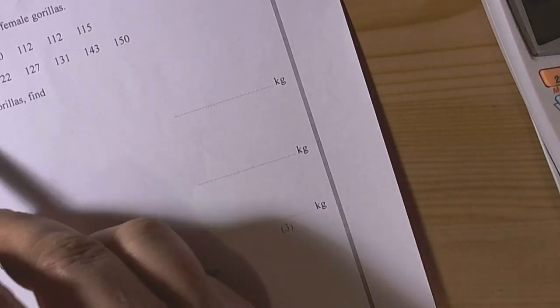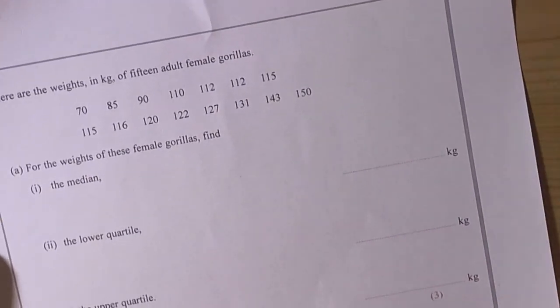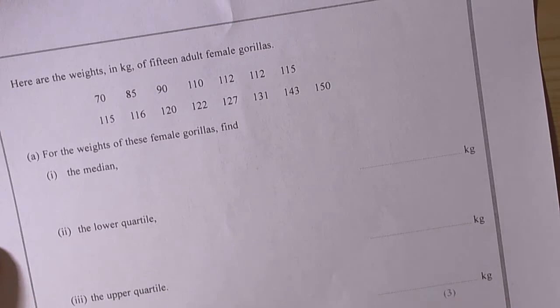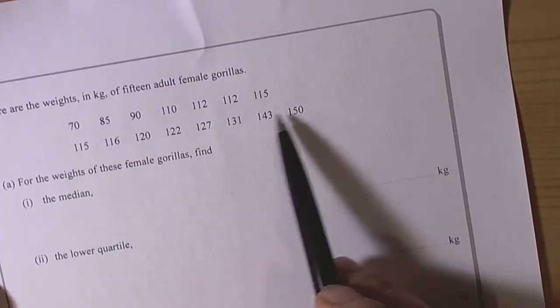So what have we got? We got some data, adult female gorillas and we're literally having to work out the median, the lower quartile and then the upper quartile. So the data needs to be in size order, well that's already been done for us.